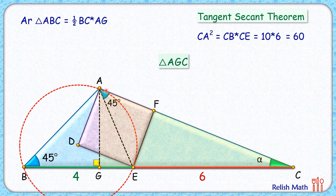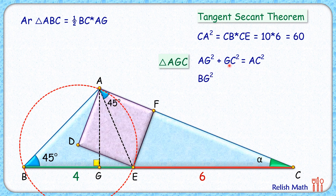Now in triangle AGC, applying Pythagoras' theorem: AG² + GC² = AC². In triangle ABG, it is an isosceles right-angle triangle — the angle at G is 90° and the angle at B is 45°, so this other angle is also 45°, meaning AG equals BG. GC is the remaining length, which is 10 minus BG. And AC² equals 60.